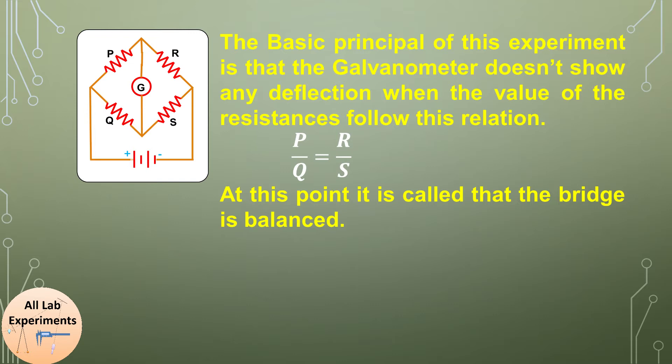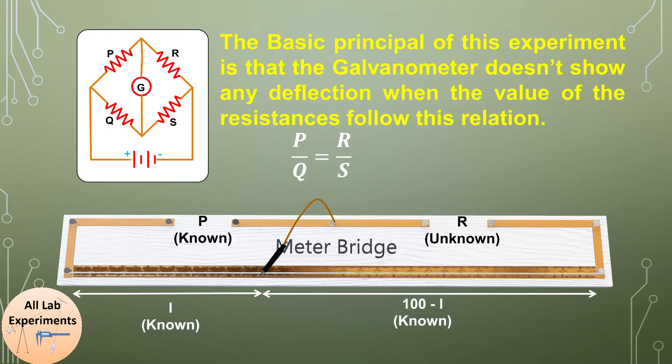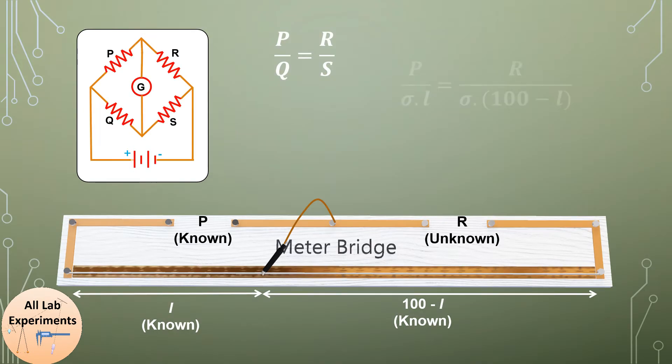Now to implement this in reality we design this meter bridge. In this case at one slot we are putting P, at another slot we are inserting this resistance R. When we acquire our stable point, instead of Q we can write as sigma L and instead of S we can write as sigma times 100 minus L.